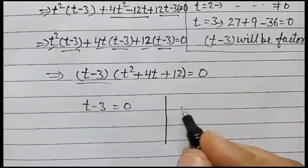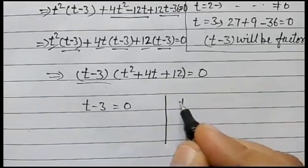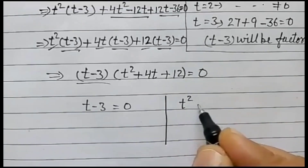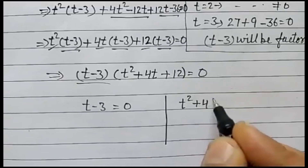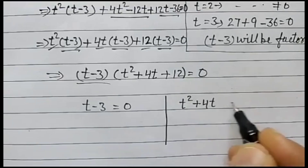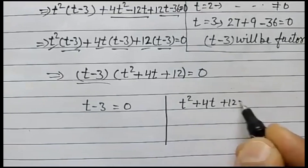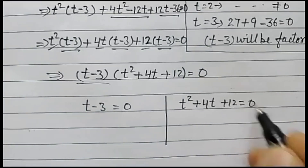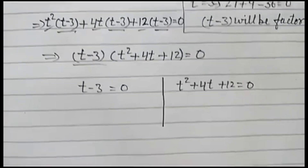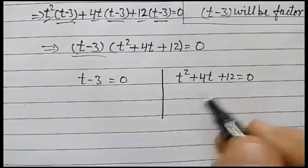So the factored form is (t minus 3) times (t squared plus 4t plus 12) is equal to 0.